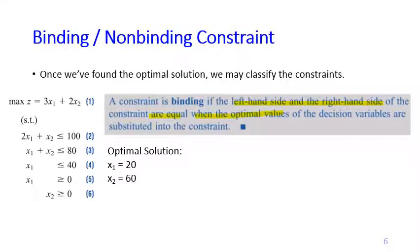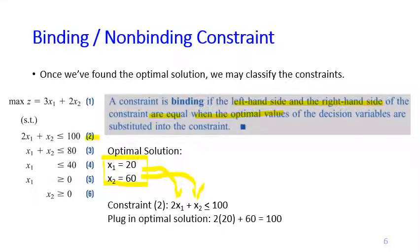Let's take a look at the Giapetta problem again. So our optimal solution for Giapetta problem is x1 equals 20, x2 equals 60. So let's say we want to check constraint 2 if it is binding or not. Constraint 2 says 2x1 plus x2 less than or equals to 100. So you plug in the x1 and x2 from the optimal solution. So we do that 2 times 20 plus 60. It is actually equal to 100. Which means that constraint 2 is binding. Because the left-hand side and the right-hand side, they are equal.